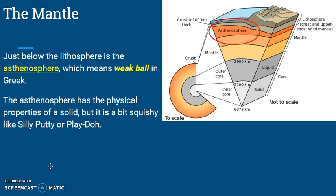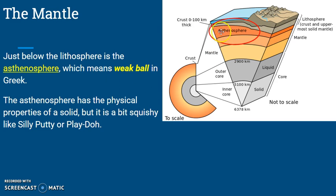Just below the lithosphere is the asthenosphere. The asthenosphere means 'weak ball' in Greek. It's this layer right here. The asthenosphere has the physical properties of a solid but it's a bit squishy — like silly putty or play-doh. It is a solid, but it's squishy.